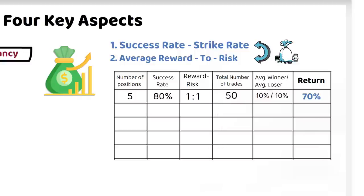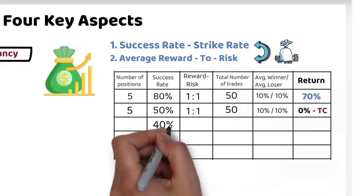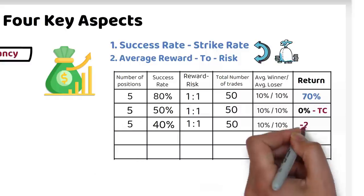If, however, you drop the success rate and maintain other metrics, you will break even, but lose when trading costs are considered. With a success rate of 40%, the returns will drop to negative 20%.